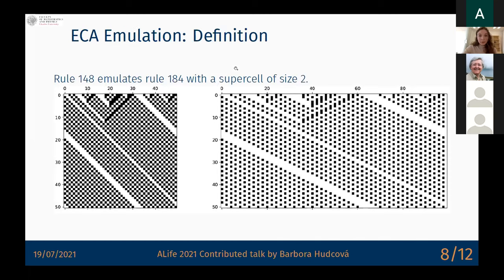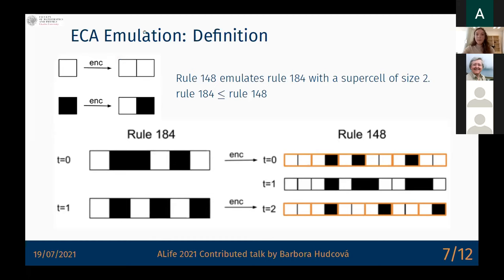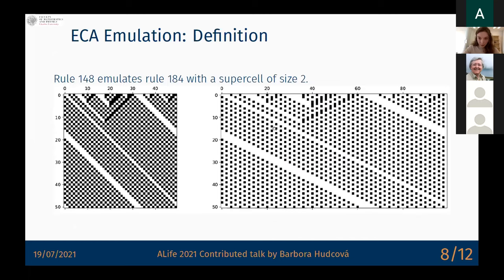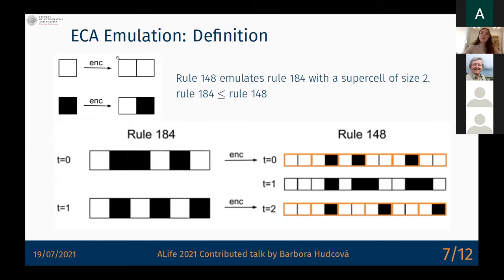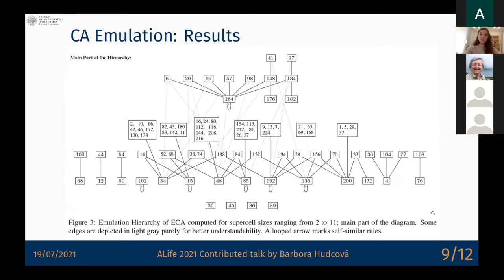What is so nice about this definition is that it has a very cool algebraic formalism. Basically it means that rule 184 is a sub-algebra of rule 148 of some power of the algebra. Just exploiting this algebraic insight, I was able to design an algorithm which computes or searches for the encodings reasonably fast to be able to compute all the relations of supercells up to size 11 for all the elementary cellular automata.